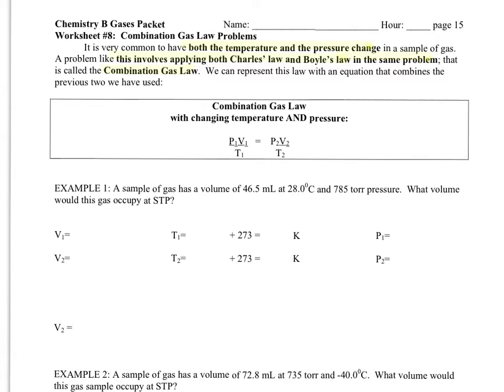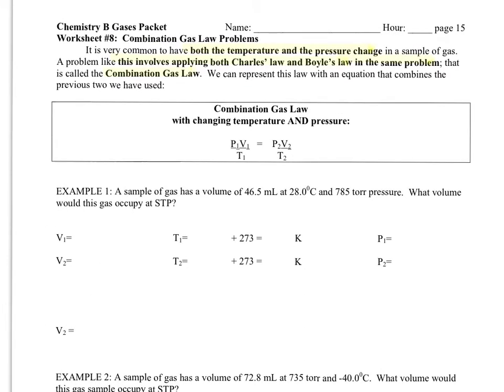So basically we can think of this as when everything is changing, or in other words, nothing stays constant. So Boyle's Law was temperature was constant, Charles' Law pressure was constant, and here with the Combination Gas Law everything is changing, nothing is constant.